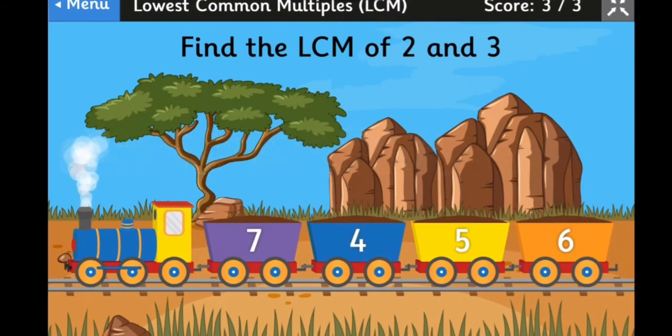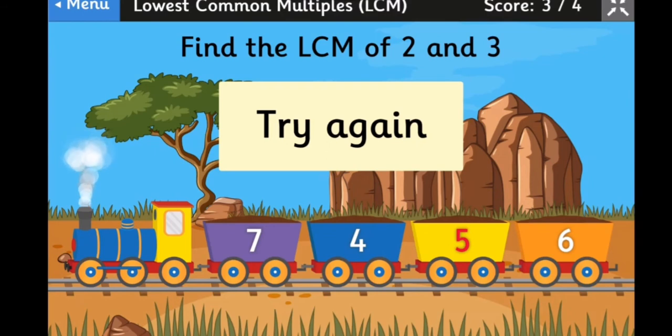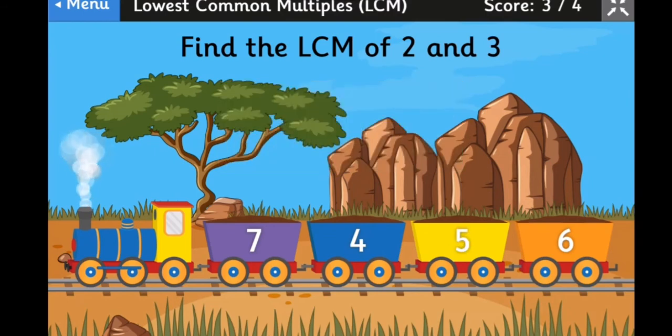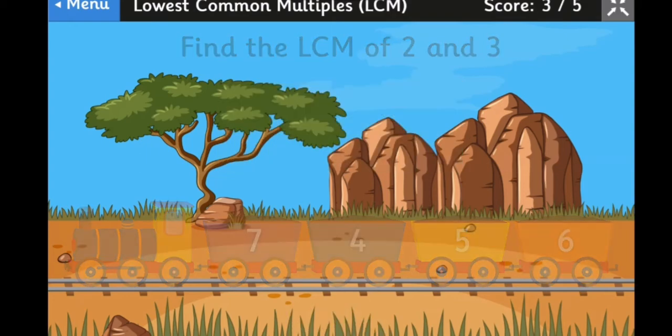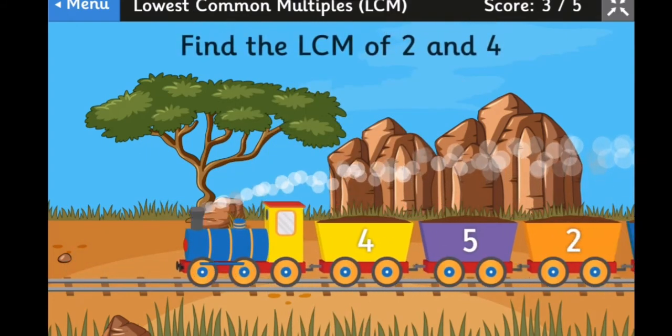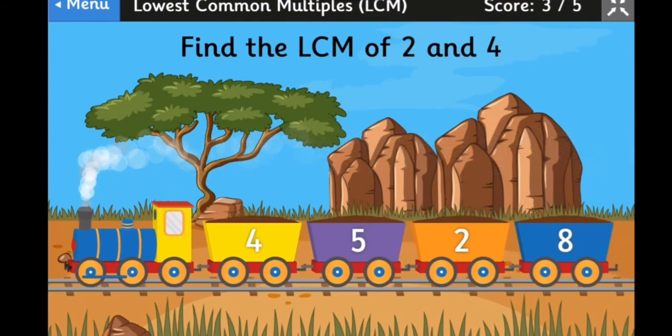So let's try to get one incorrect and see what happens. Find the LCM of 2 and 3. I'm just going to select 5, we're trying to get it incorrect. The correct answer is 6 but I'm going to select 5. Try again. So you get one chance to try again. I'm going to select 4, so you get one chance to try again and then it gives you the correct answer.